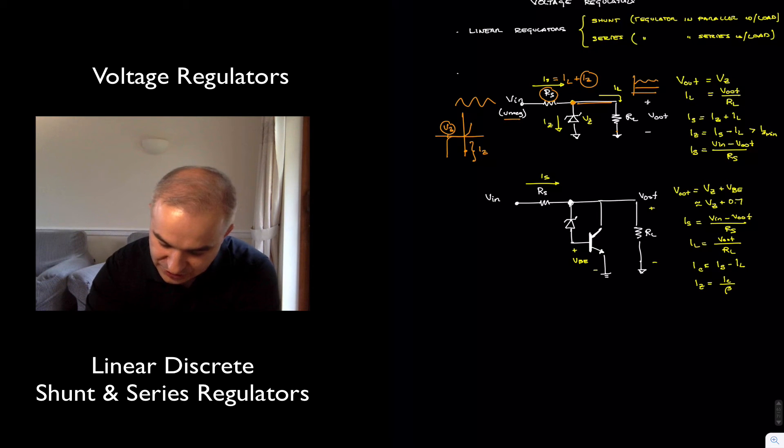So, what is the output voltage? The output voltage is equal to the Zener voltage. The output current is going to be the output over the resistance, meaning the Zener voltage over the load resistance.